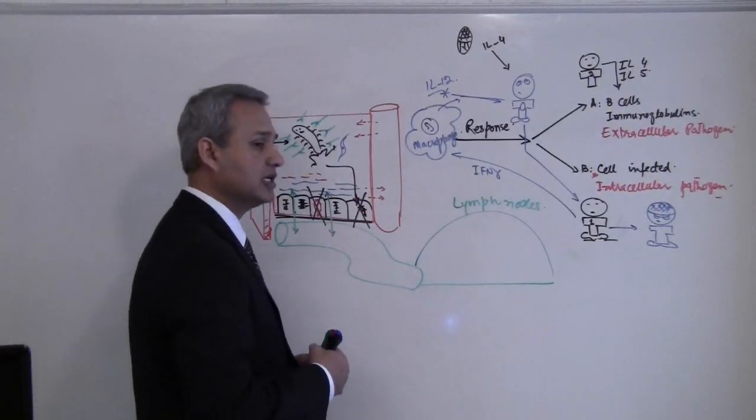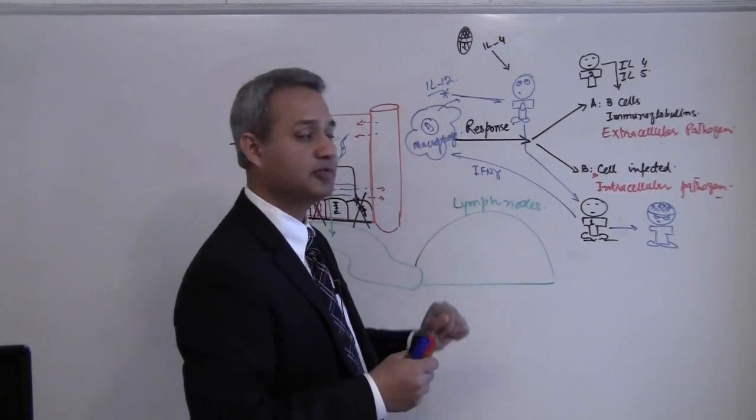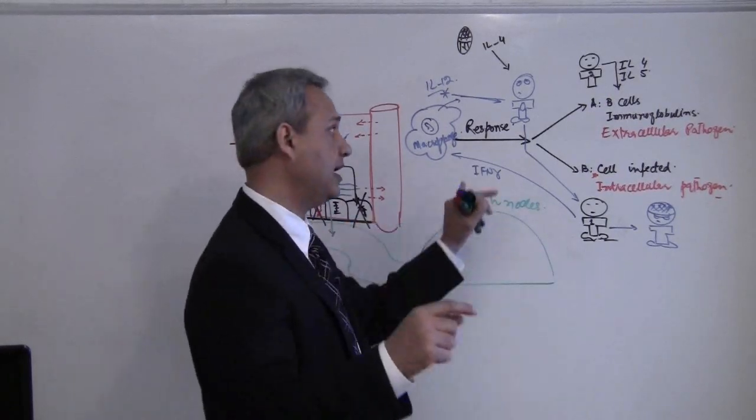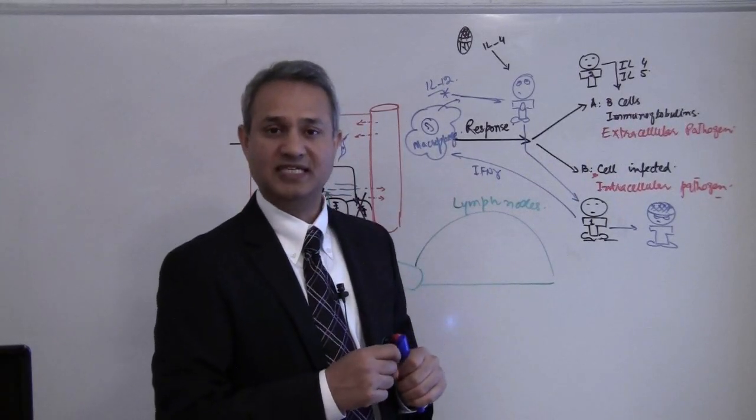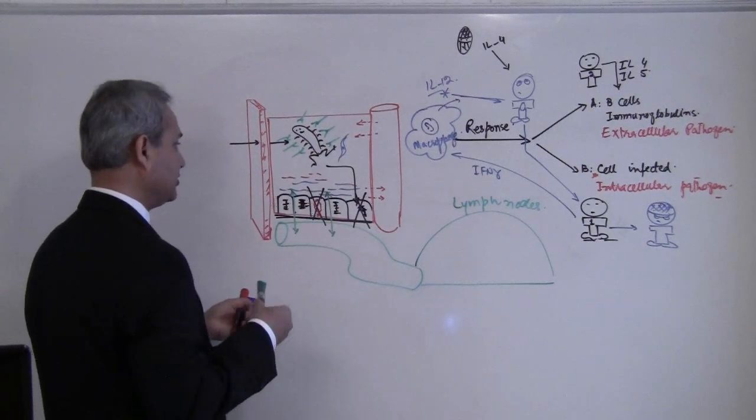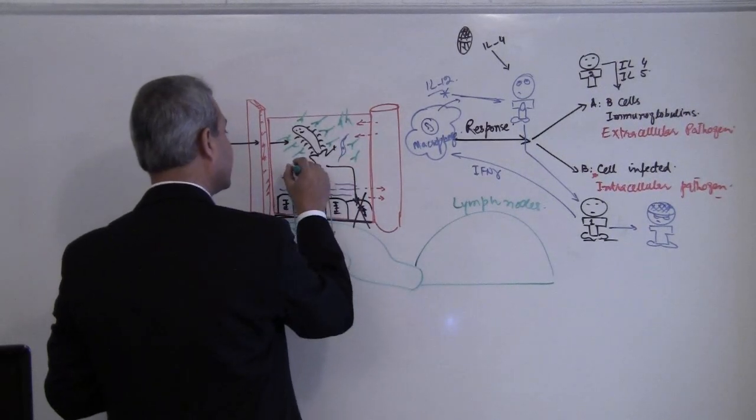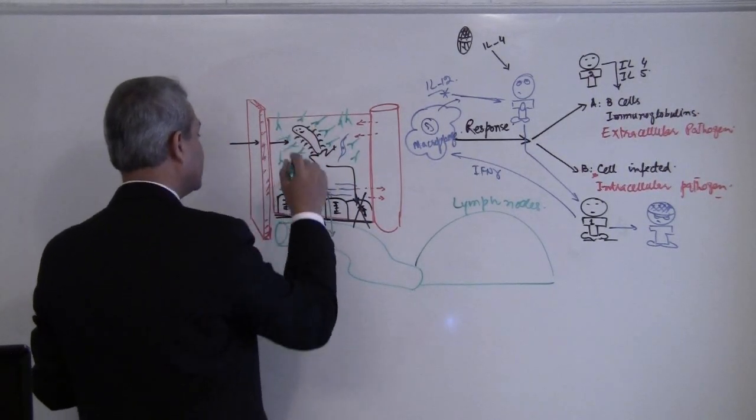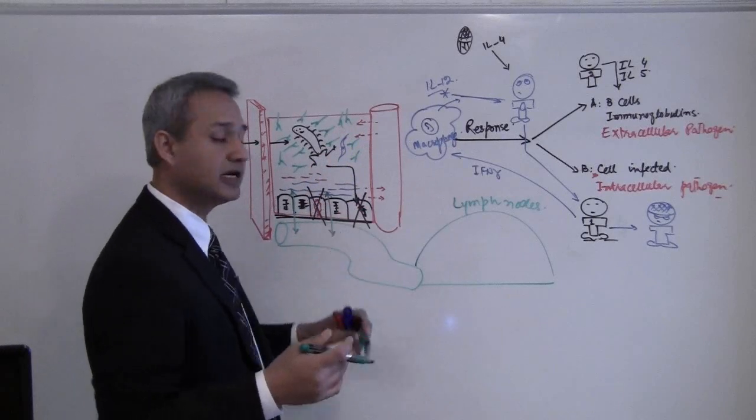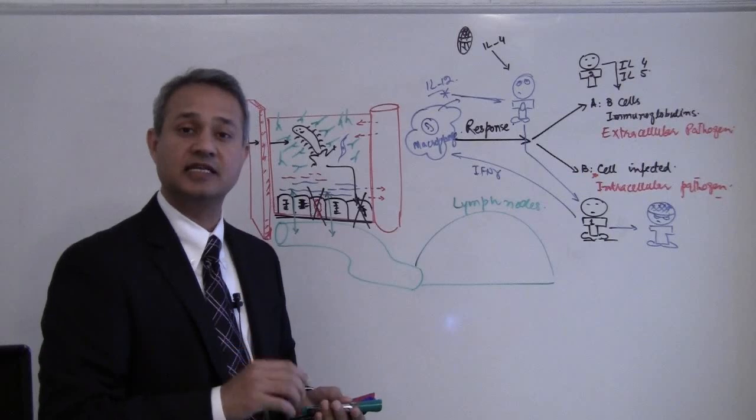But in case of mycobacterium leprae, in some patients, the response becomes wrong. This T helper cell, instead of going towards the pathway for cytotoxicity, goes to the pathway for the immunoglobulins, the B cell pathway. That causes antibodies to be produced, immunoglobulins to be produced. Those immunoglobulins are now sitting, searching in the interstitium for the pathogen. Where is the pathogen? Inside the cells. These guys cannot get into the cell. The pathogen sits inside the cell, is happy, does the damage. That is lepromatous leprosy.